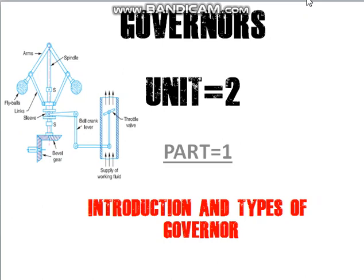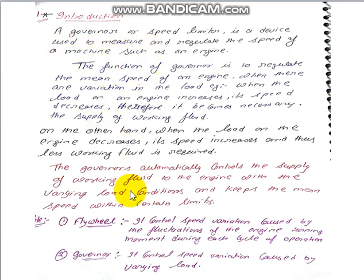Hello friends, welcome back to e-notes. Today we will see Unit 2: Dynamics of Machines. This unit covers governors. In Part 1 we will see the introduction and types of governors — what is a governor, what types exist, and the actual use of the governor. First we have some theoretical parts, after which I will show you an animated video so you can see how the governor works.